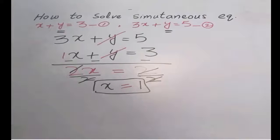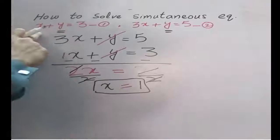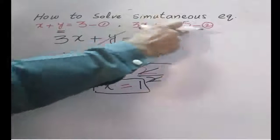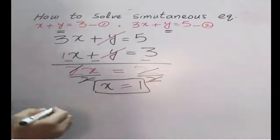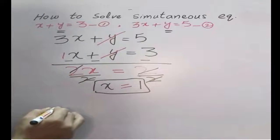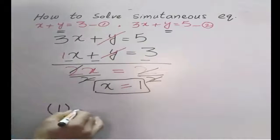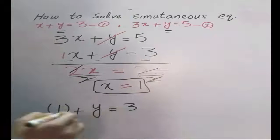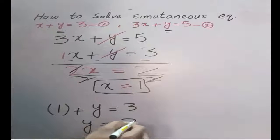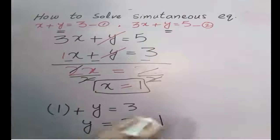After finding the value of one variable, either x or y, just put the value of x or y in the original equation. We will put this x value in this equation. 1 plus y equals 3. So y equals 3 minus 1. This one shifts to this side. y equals 2.